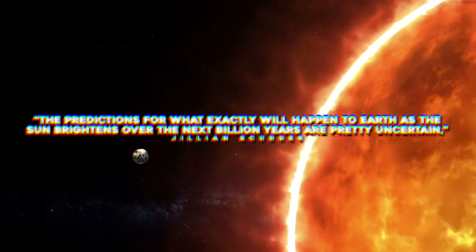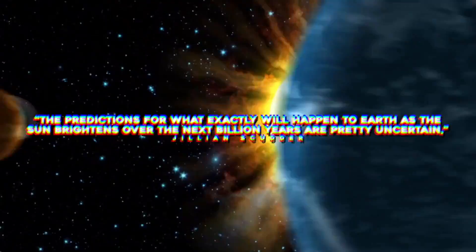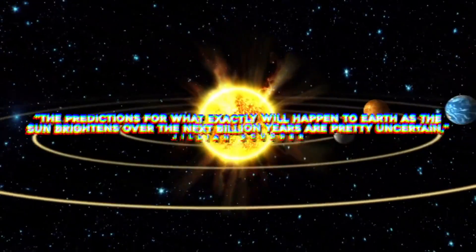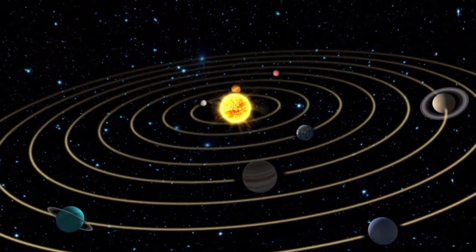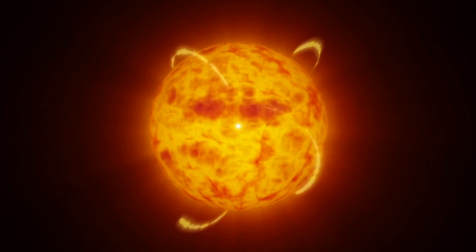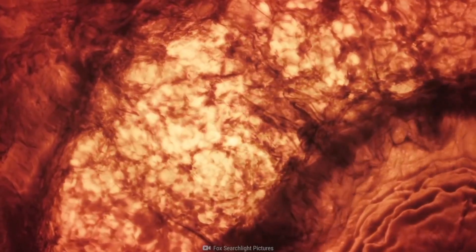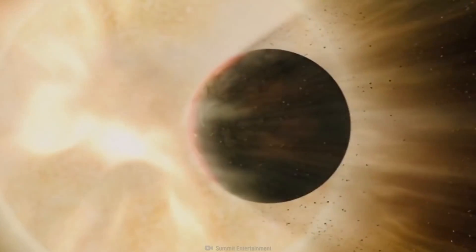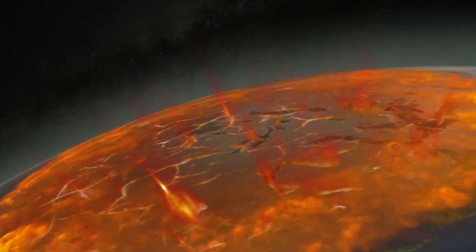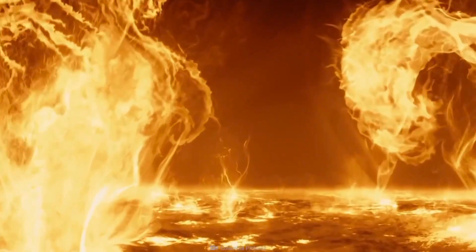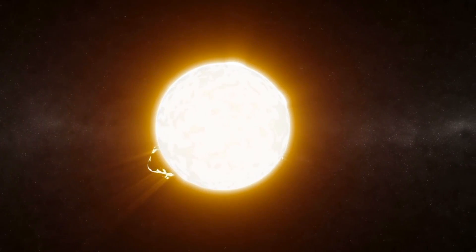The predictions for what exactly will happen to Earth as the sun brightens over the next billion years are pretty uncertain, said Gillian Scudder, an astrophysicist at the University of Sussex. But the general gist is that the increasing heat from the sun will cause more water to evaporate off the surface and be held in the atmosphere instead. The water then acts as a greenhouse gas, which traps more incoming heat, which speeds up the evaporation.